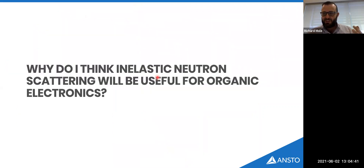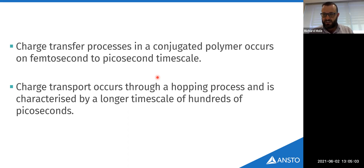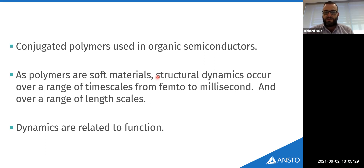So why do I think inelastic neutron scattering will be useful? The premise is that the timescale of charge transfer processes in an organic semiconductor is on the femto-to-picosecond timescale, whereas charge transport through polymers occurs on the order of tens or hundreds of picoseconds. These soft materials — conjugated polymers — have dynamics in exactly this range: vibrations and different motions on these timescales. The structural dynamics observable with inelastic neutron scattering are related to the function of these materials.